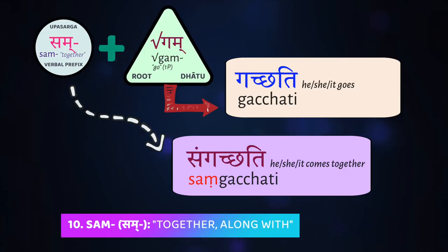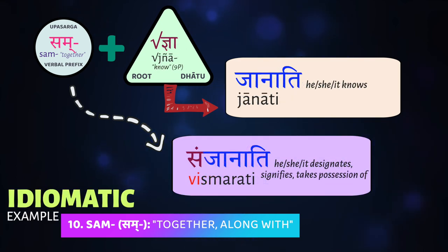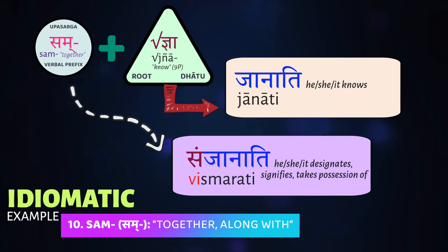Finally, there is the prefix sam, which is easy to remember — it means 'together.' It's cognate with the Latin prefix con, as in concert, convention, or connect. Sam plus gam means 'to come together with someone else' — saḥ saṃgacchati, 'he comes together with someone else.' An idiomatic usage of sam comes with the root jñā: saṃjñā can mean a range of things — to agree on something, to recognize or acknowledge someone, or to appoint/designate something for a particular purpose, and in that latter sense, to signify something.